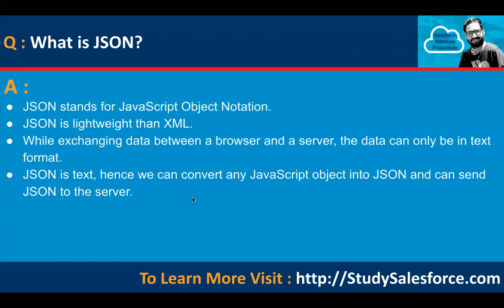What is JSON? JSON stands for JavaScript Object Notation. JSON is lighter weight than XML. While exchanging data between a browser and a server, the data can only be in text format. JSON is text, so we can convert any JavaScript object into JSON and send it to the server.